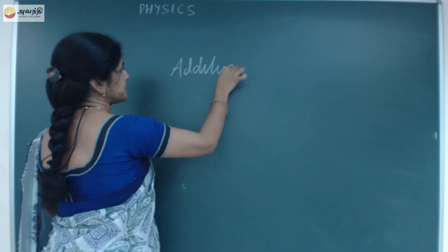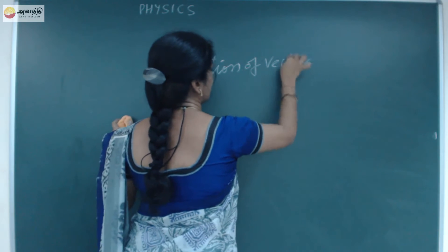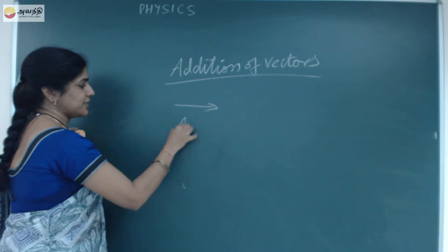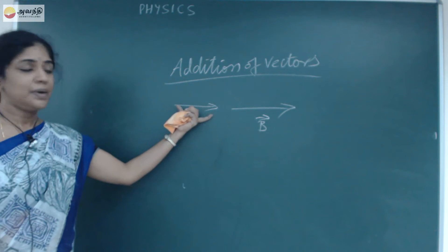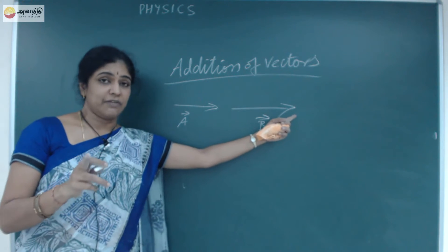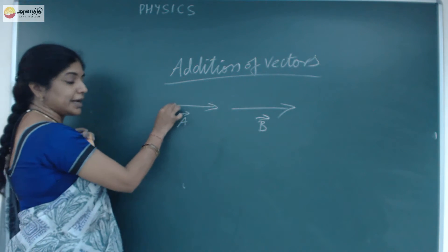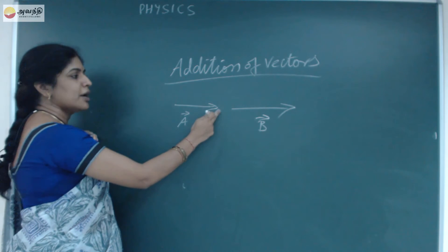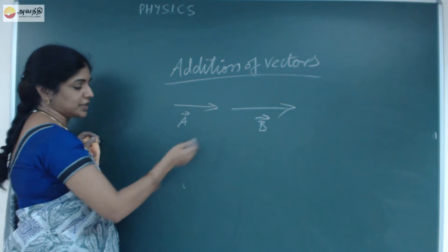Addition of vectors. For example, there are 2 vectors, Vector A and Vector B. These 2 vectors may have the same or different magnitude. To find out the sum of these 2 vectors, we join the tail of one vector with the head of the other vector.